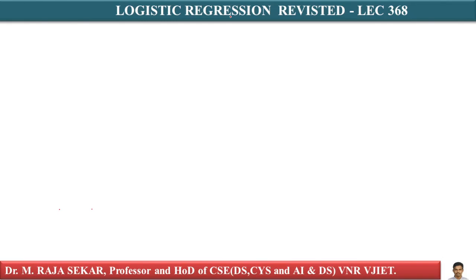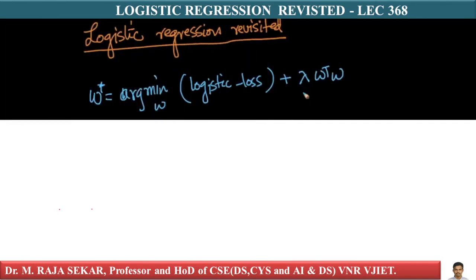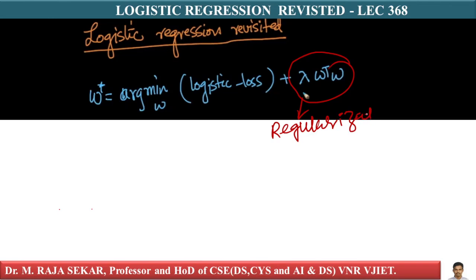Let's revisit our logistic regression. What does the logistic regression optimization problem look like? W star equals argmin over w of logistic loss plus lambda times w-transpose-w. What is this lambda times w-transpose-w? This is regularization of our logistic regression.